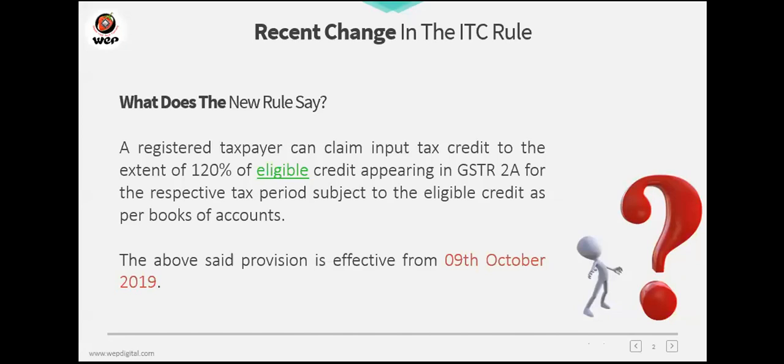So what is this new rule all about? A registered taxpayer can claim ITC to the extent of 120% of eligible credit appearing in GSTR 2A of a particular period, subject to eligible credit as per books of accounts. This provision was passed on 9th October 2019 and is effective from that date.